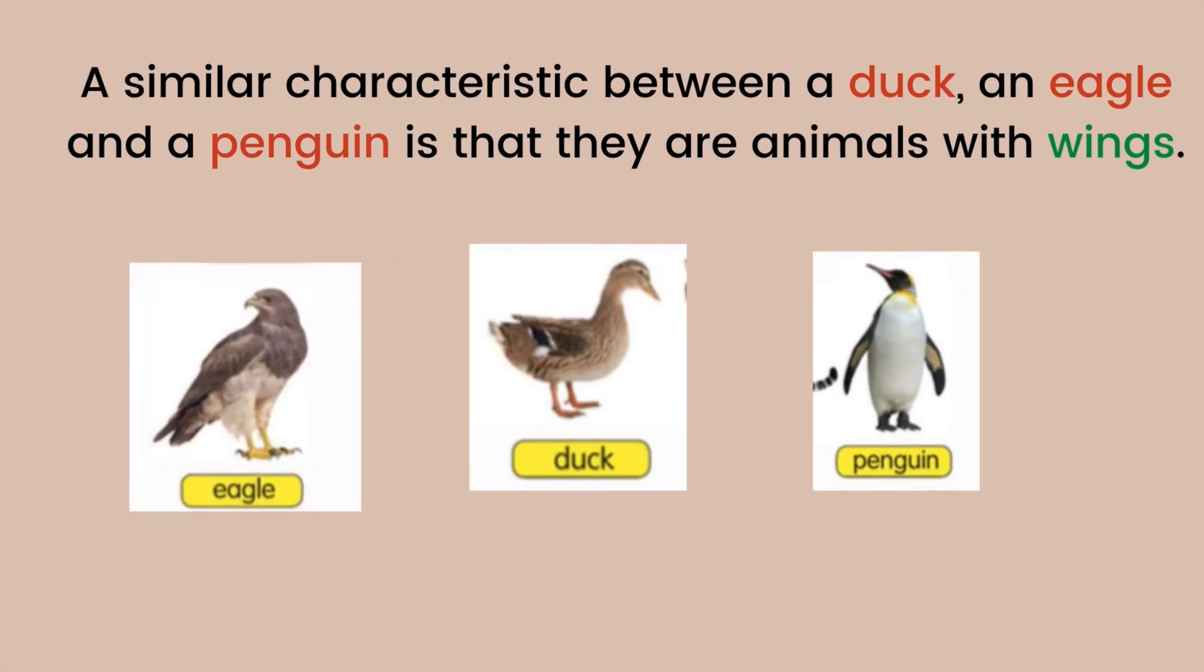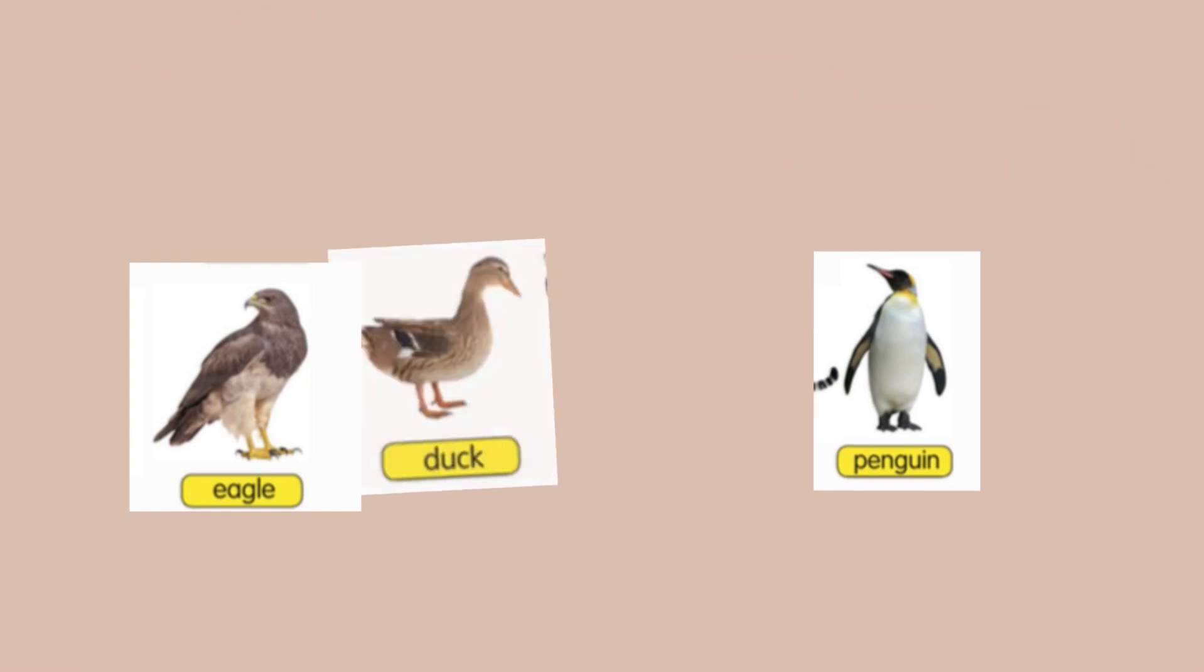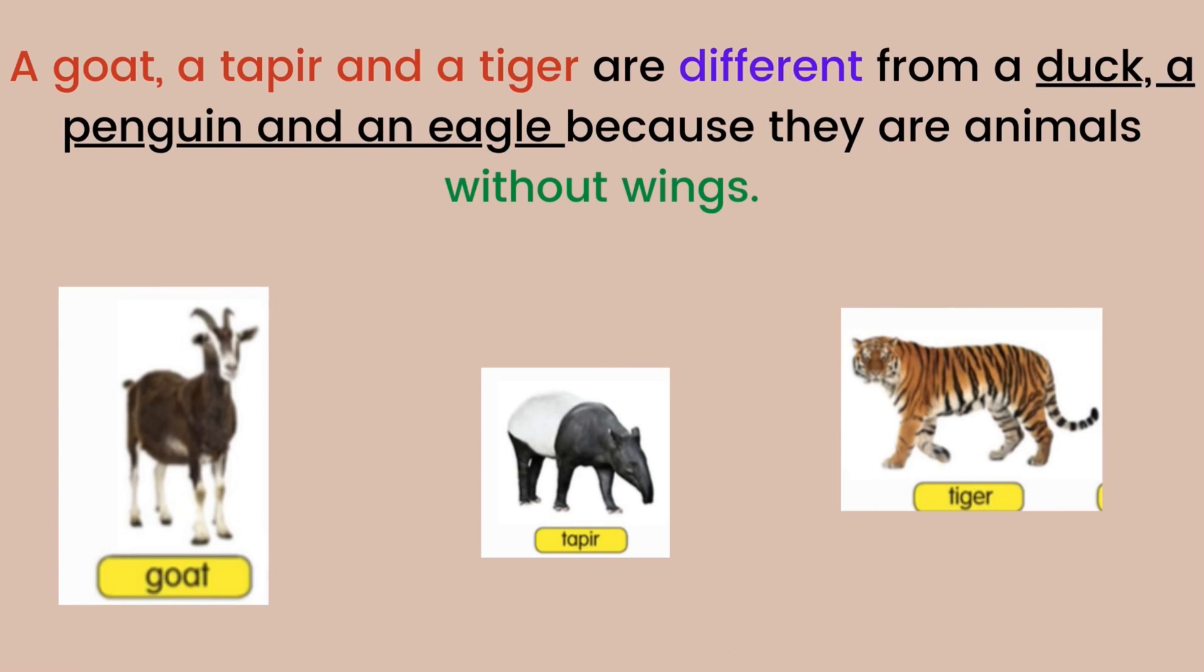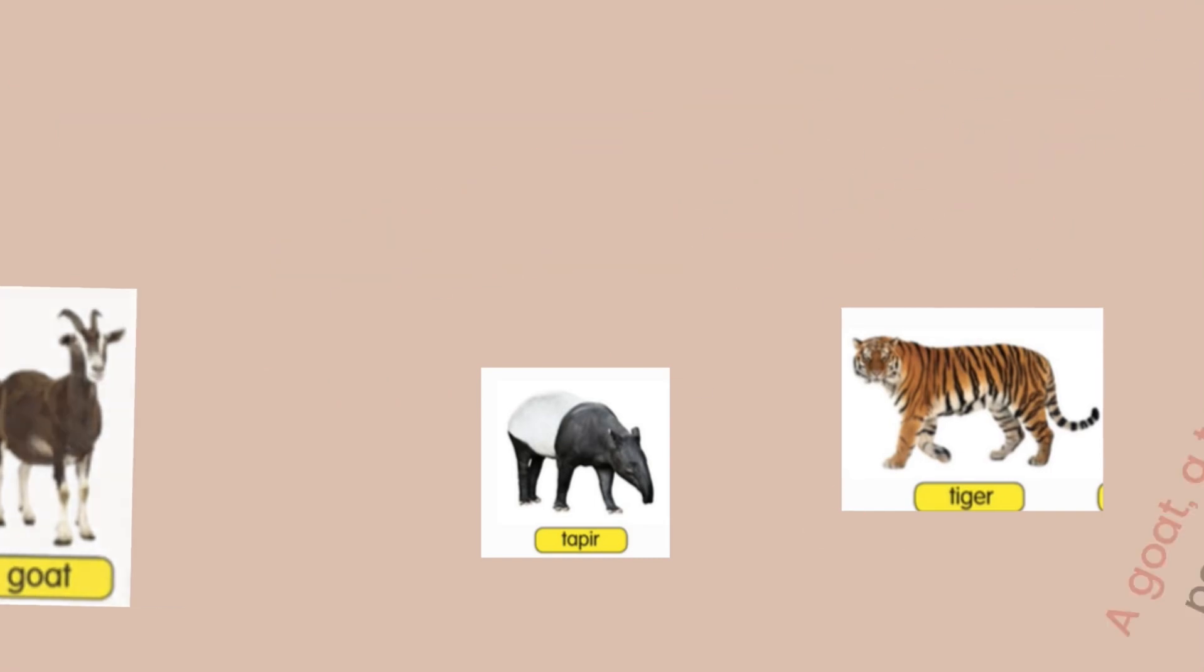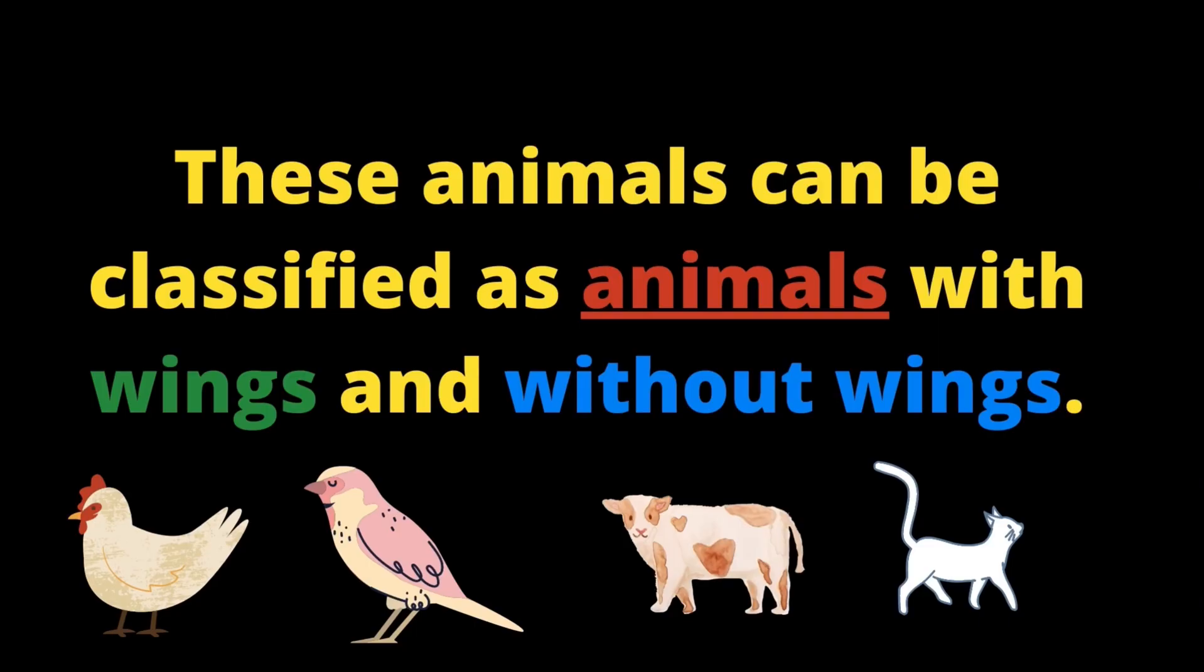A similar characteristic between a duck, an eagle, and a penguin is that they are animals with wings. A goat, a tapir, and a tiger are different from a duck, a penguin, and an eagle because they are animals without wings. These animals can be classified as animals with wings and without wings.